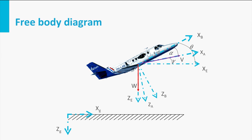Now let us draw the aerodynamic forces. By definition, the lift force is always perpendicular to the airspeed vector and the drag is parallel to the airspeed vector, thus they are defined in the air path axis system. The final force acting on the aircraft is the thrust of the propulsion system. The direction of this force depends on how the propulsion system is positioned relative to the airframe, so in general it has an angle with respect to the airspeed vector, which we call the thrust angle of attack.